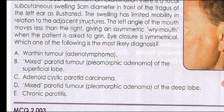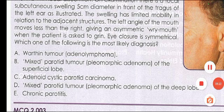The answer options are: A — Warthin's tumor (adenolymphoma), B — mixed parotid tumor (pleomorphic adenoma of the superficial lobe), D — pleomorphic adenoma of the deep lobe of the parotid gland, and E — chronic parotitis. The correct answer is adenoid cystic parotid carcinoma, because facial palsy most commonly occurs with this malignant tumor.